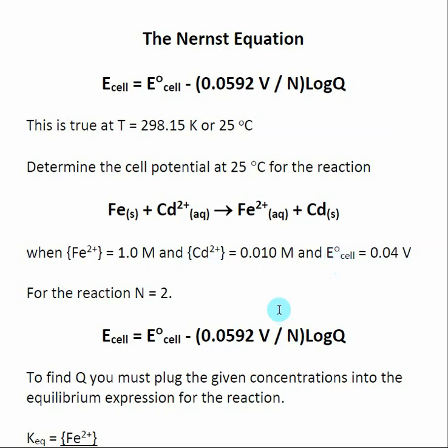One thing to remember is N is involved in this calculation. N is the number of electrons transferred in our balanced reaction. Here, N equals 2. Iron is giving up two electrons to become Fe²⁺, and cadmium is grabbing two electrons to become cadmium solid.